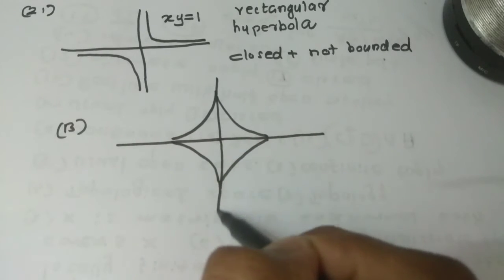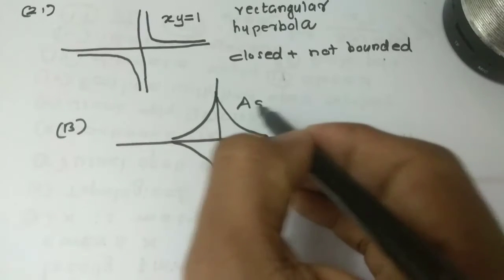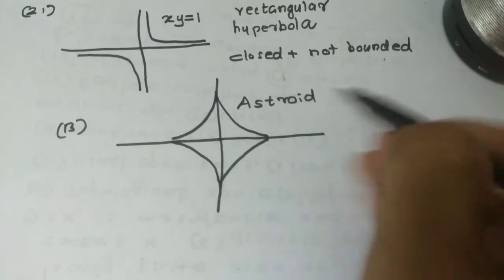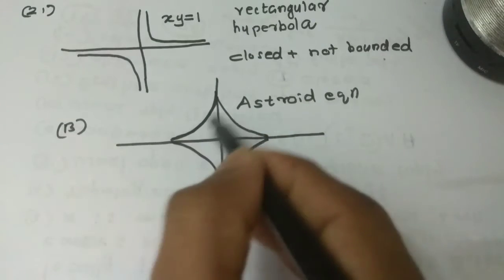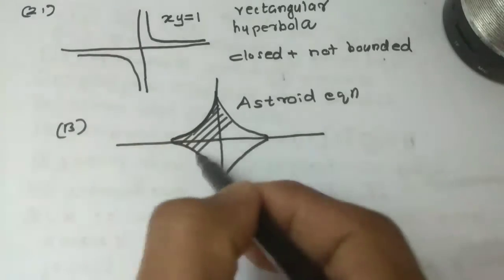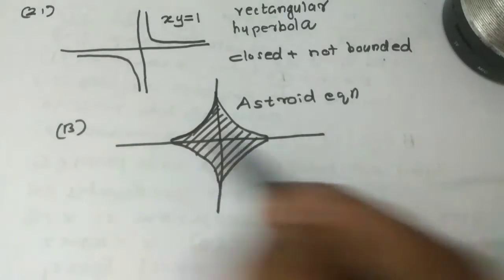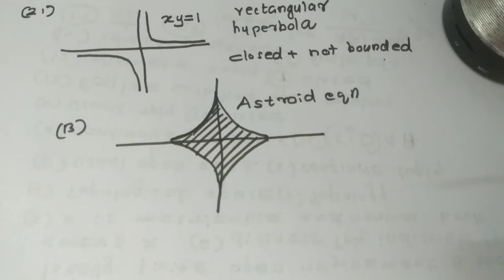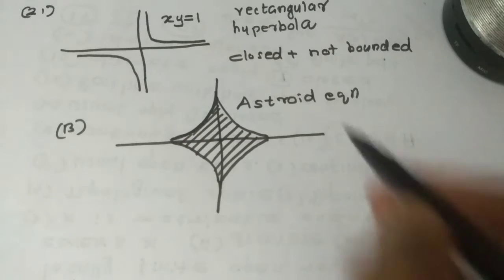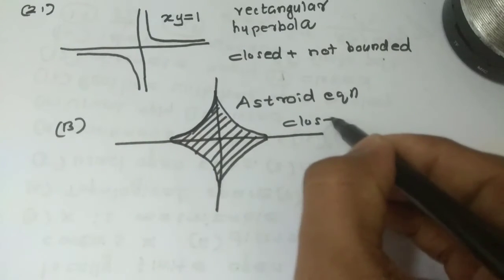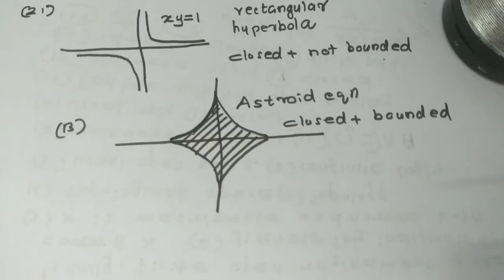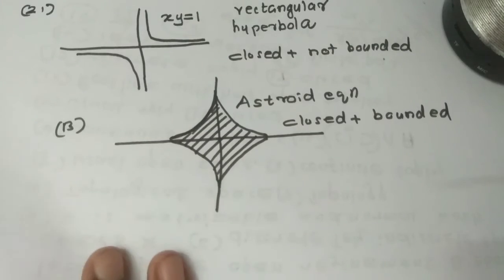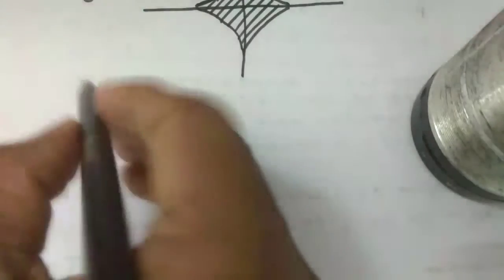We will use the graph structure. The asteroid equation — we will use the graph, closed area. If we use the graph, it is closed. This is the state you have to write. So, the asteroid equation is closed — closed plus bounded. Option C.